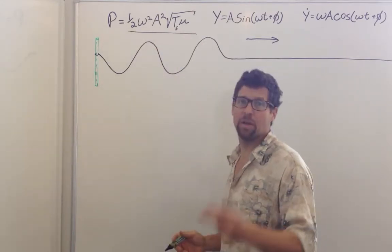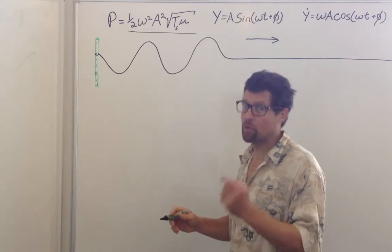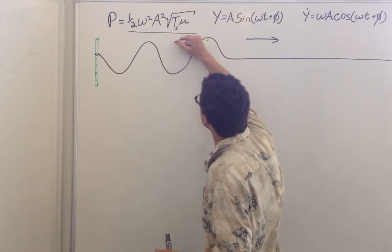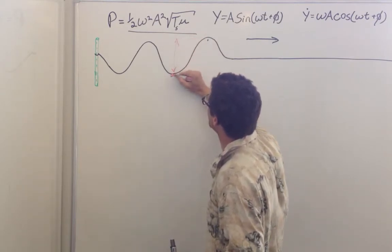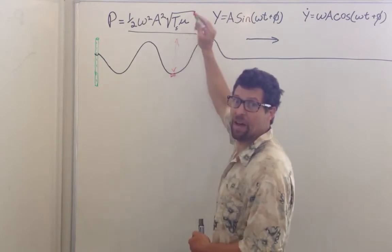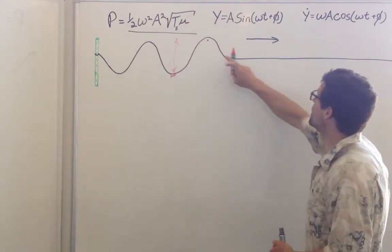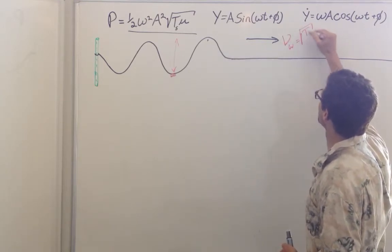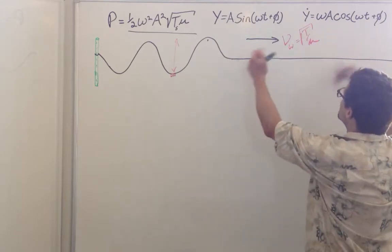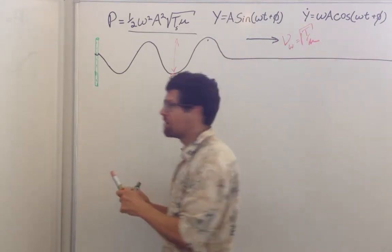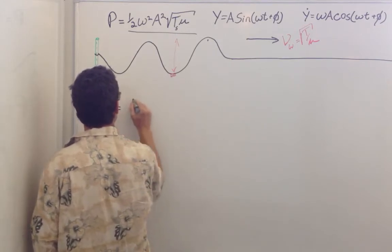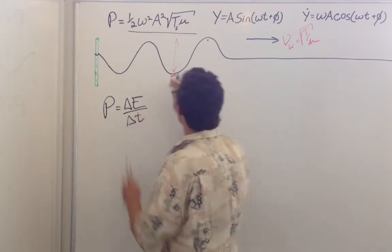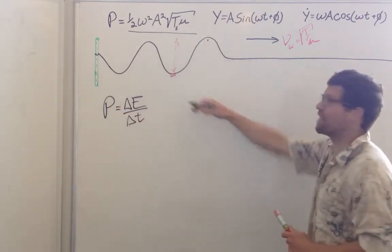We know that power is transmitted for two reasons, and we're going to derive that power using both of them. First, we know there's energy in the system because this is a little harmonic oscillator — this chunk of string moving up and down — and it has energy. Because the wave is traveling with speed equal to the square root of tension over mu, there's going to be energy here. That rate of energy transfer is power: equal to the amount of energy divided by the time it takes for this chunk of string to get that energy.